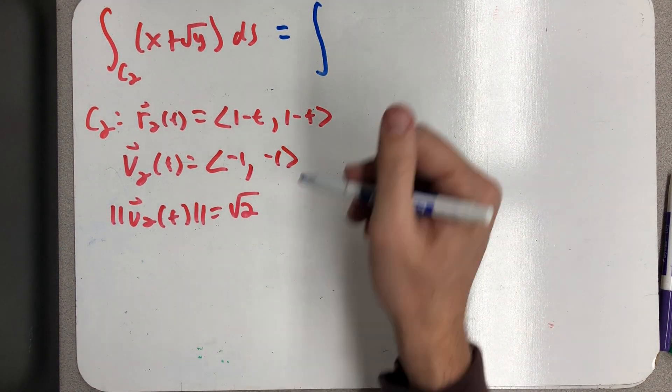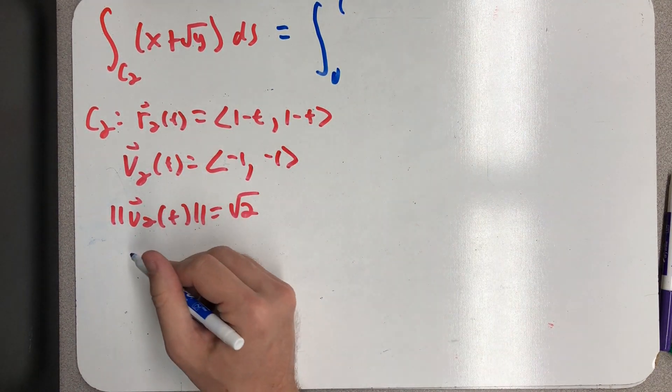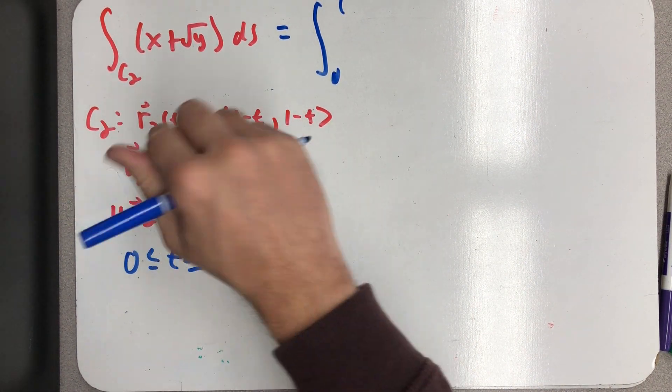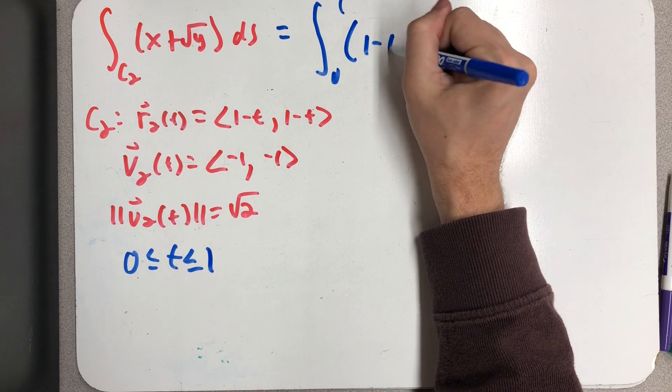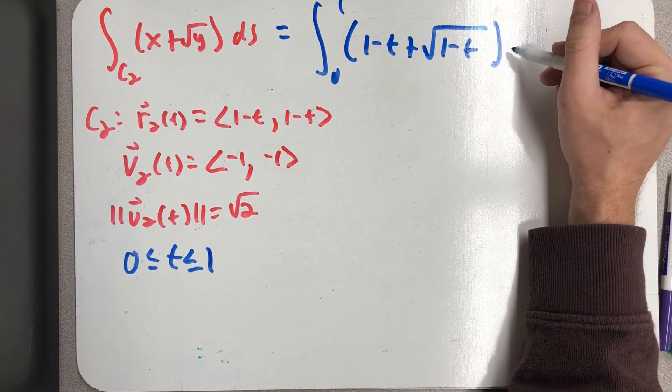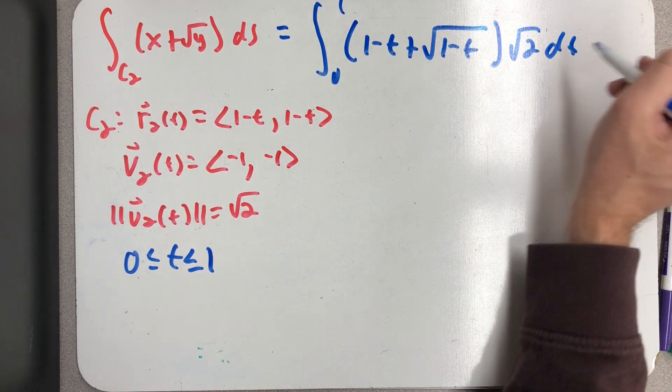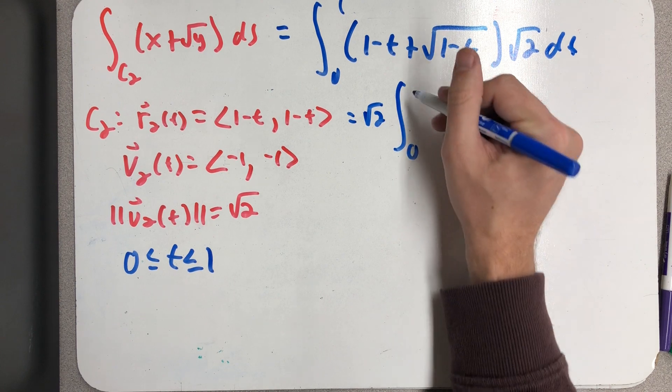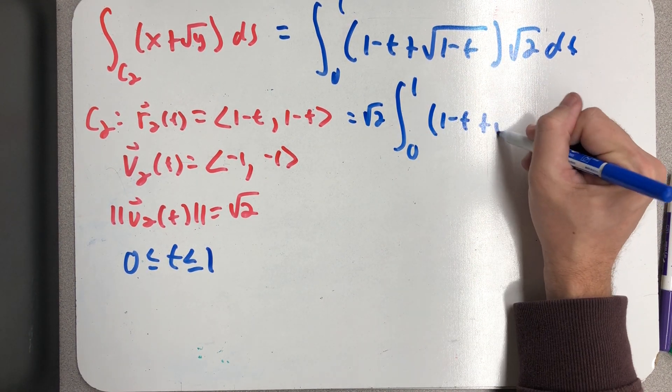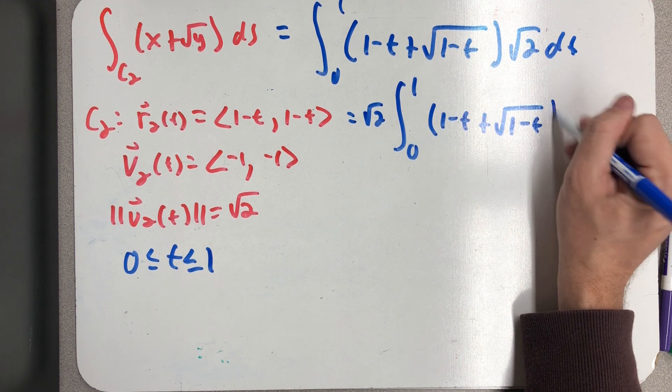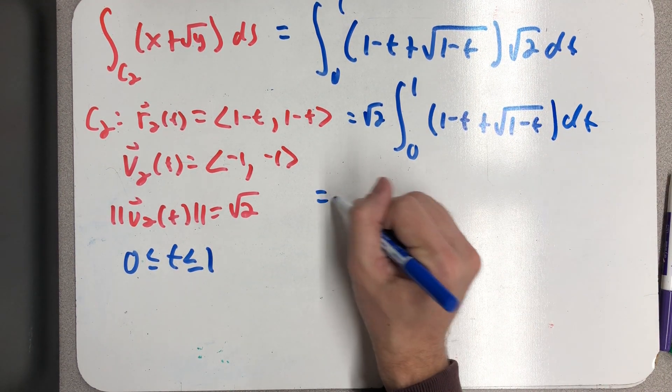And so now I rewrite my path integral. I have an integral from zero to one. Again, I didn't write down my parameter interval, but it was from zero to one. I have to plug in x for x and y for y. So I have a √2 I can bring out front.